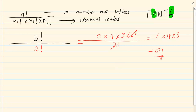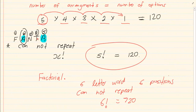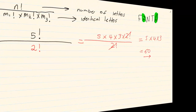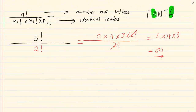Now look at the difference in answers. When we said A is treated differently, we got 120 options. But when we say the A's are treated as the same letter, we only get 60 options.